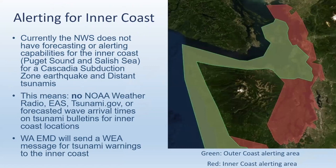We do have an issue for alerting for the intercoast Puget Sound and Salish Sea. Currently, the National Weather Service does not have forecasting or alerting capabilities for the intercoast for a Cascadia subduction zone earthquake — the big one — or a distant tsunami from Alaska or somewhere else in the Pacific Ocean. This means no weather radio broadcasts, emergency alert system broadcasts, or information on tsunami.gov will be available for intercoast locations. However, Washington Emergency Management Division will be sending out a wireless emergency alert tsunami warning to the intercoast, shown as the red polygon on the map.